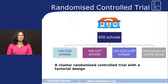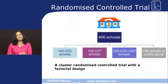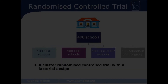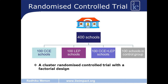The researchers selected 400 schools. In 100, the CCE program was implemented; in 100, the LEP program was implemented; in another 100, a combination of CCE and LEP; and finally 100 schools served as a control group where no program was implemented. This is called a cluster randomized controlled trial because the randomization is at the school level — the cluster is the school — and the outcomes are measured at the level of the individual student. It has a factorial design because there is a treatment arm for each program as well as a treatment arm where both programs are implemented simultaneously, allowing assessment of individual and combined program impacts.